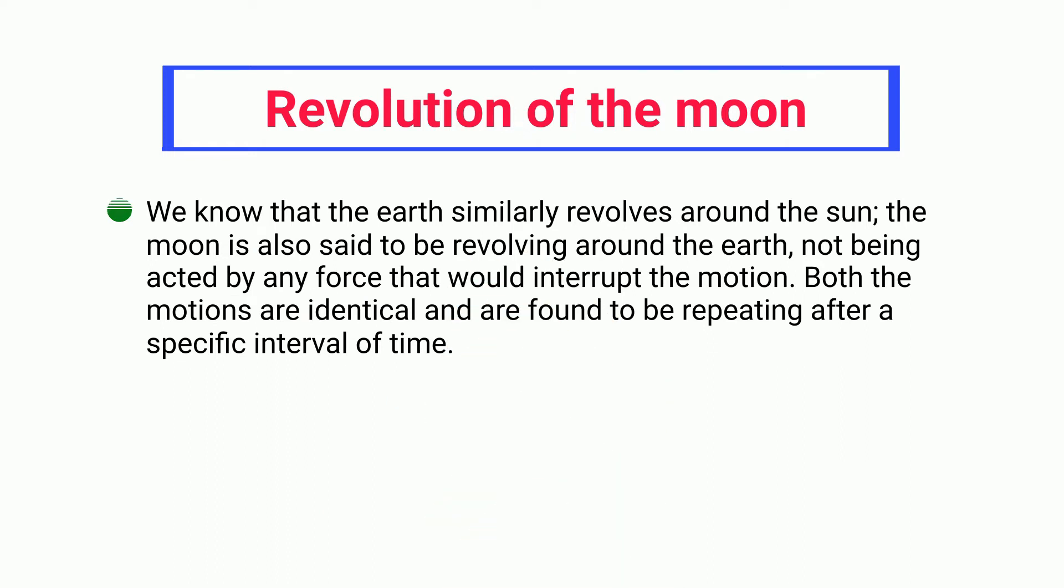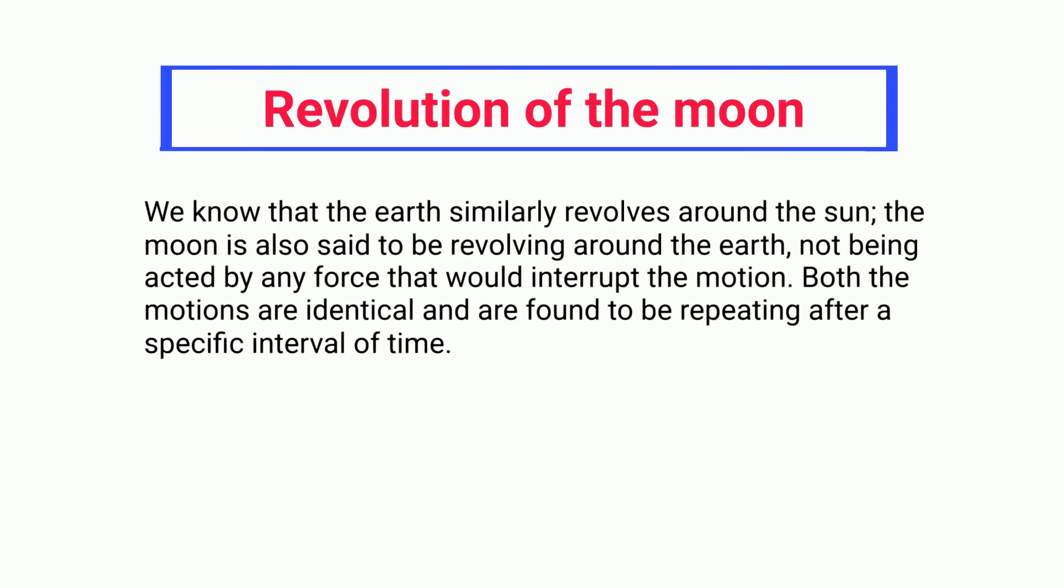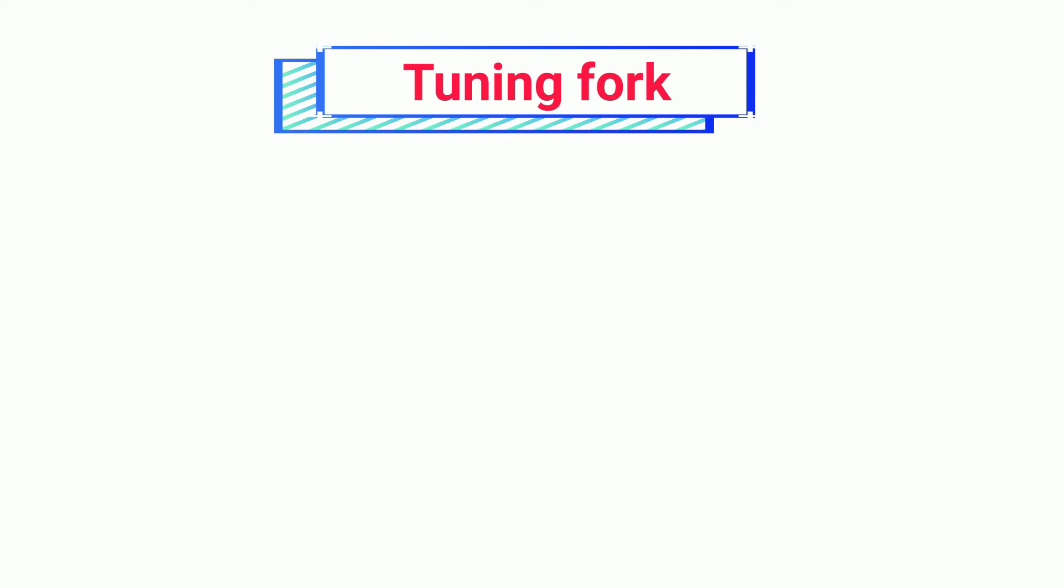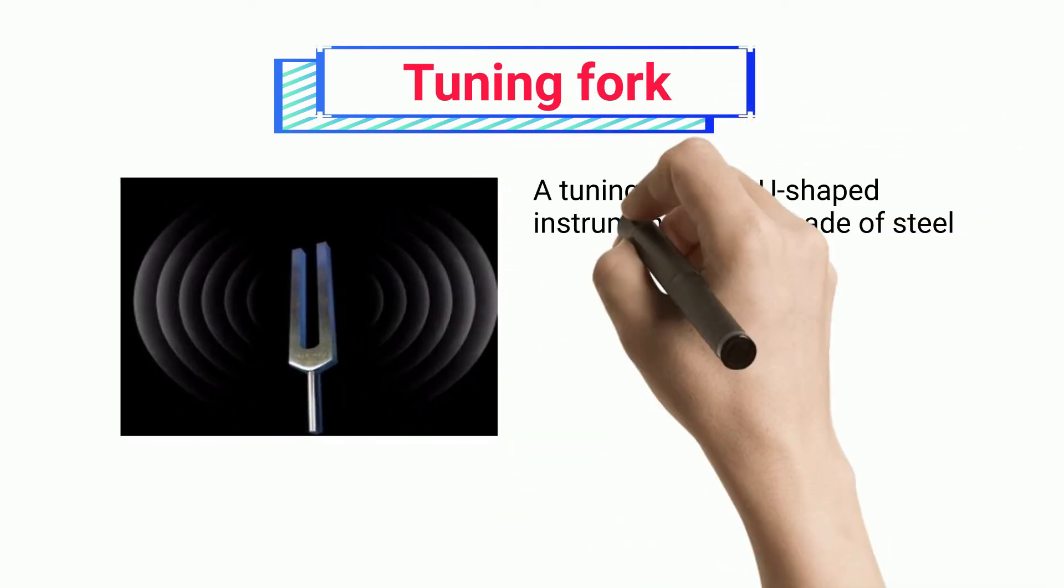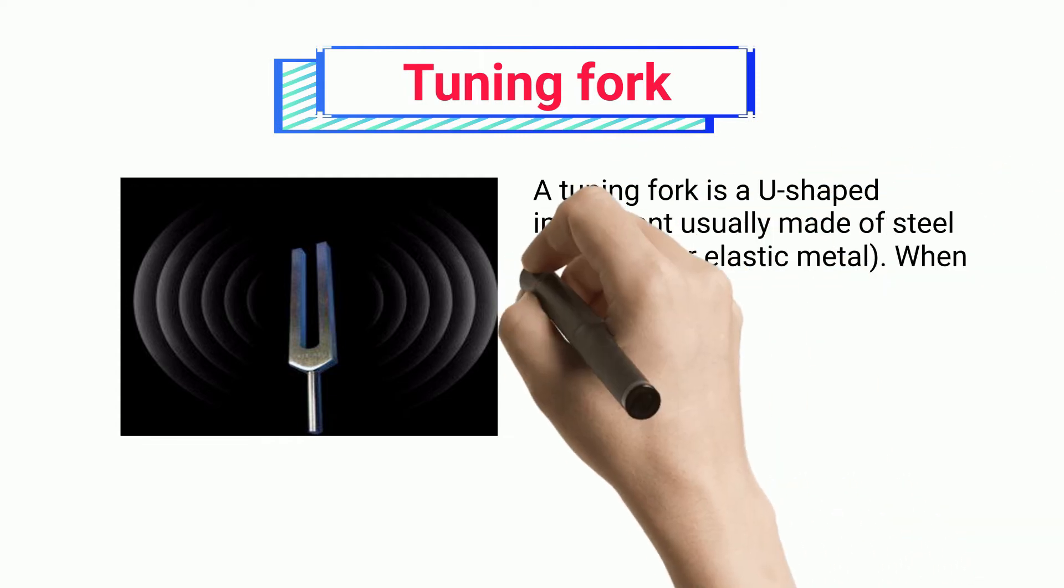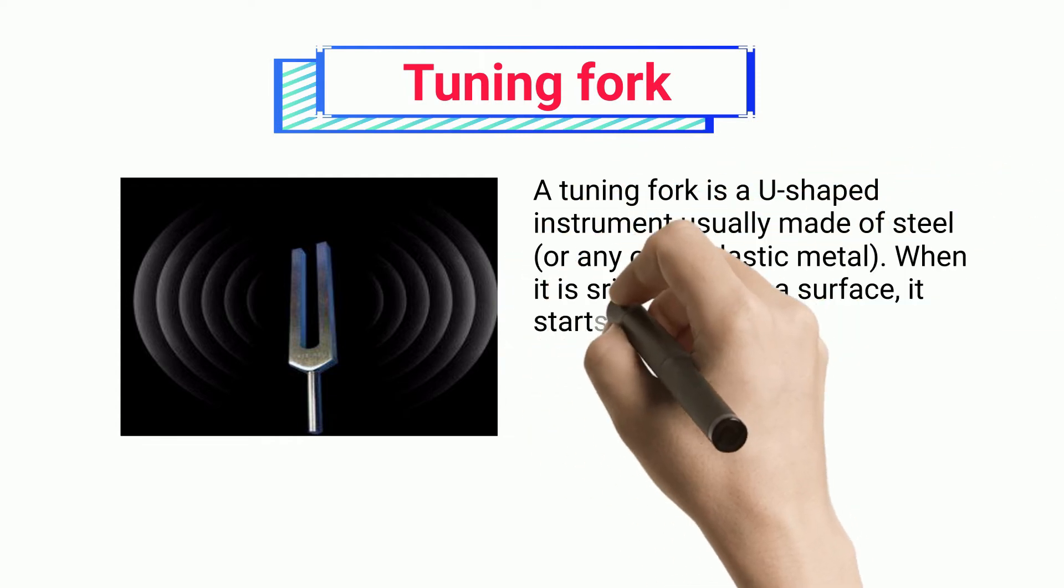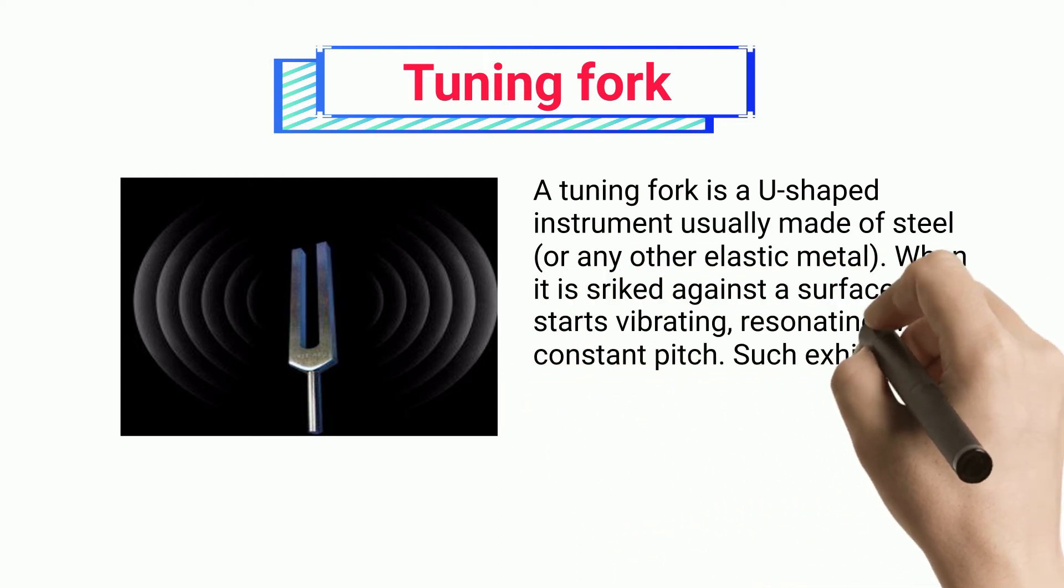Tuning fork: A tuning fork is a U-shaped instrument usually made of steel or any other elastic metal. When it is struck against a surface, it starts vibrating, resonating with a constant pitch. Such exhibited vibrations are periodic, hence it shows a periodic motion.